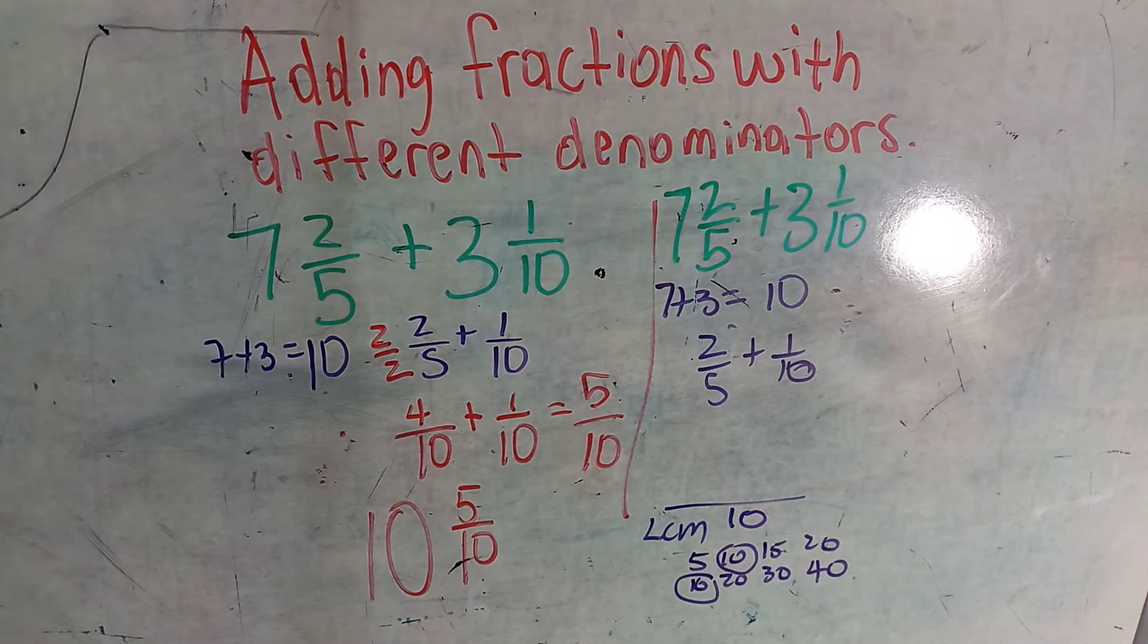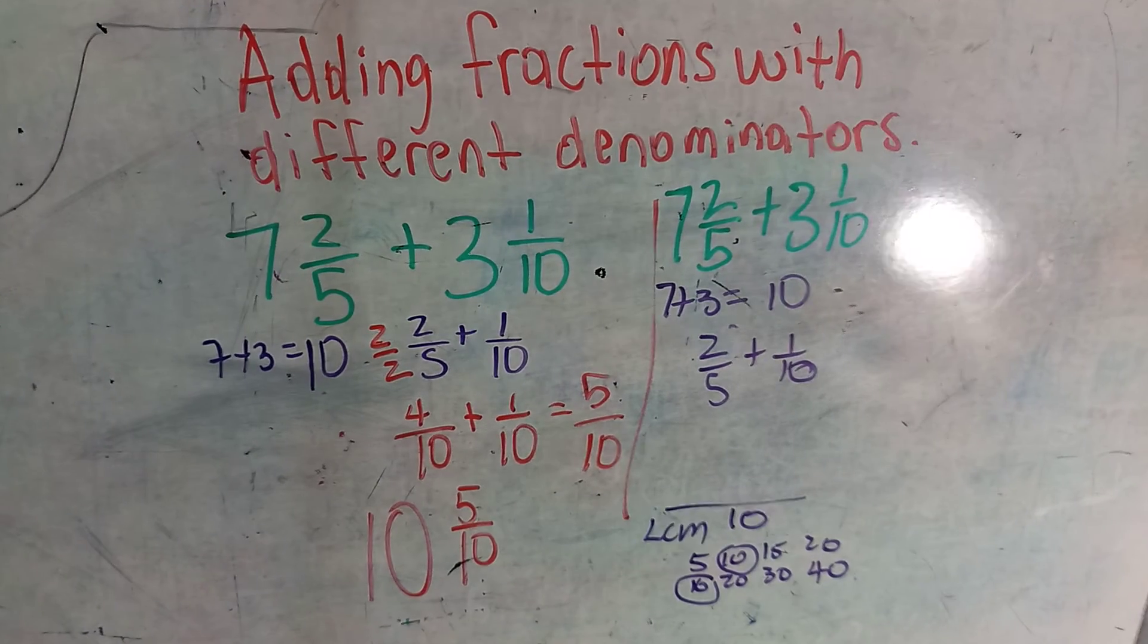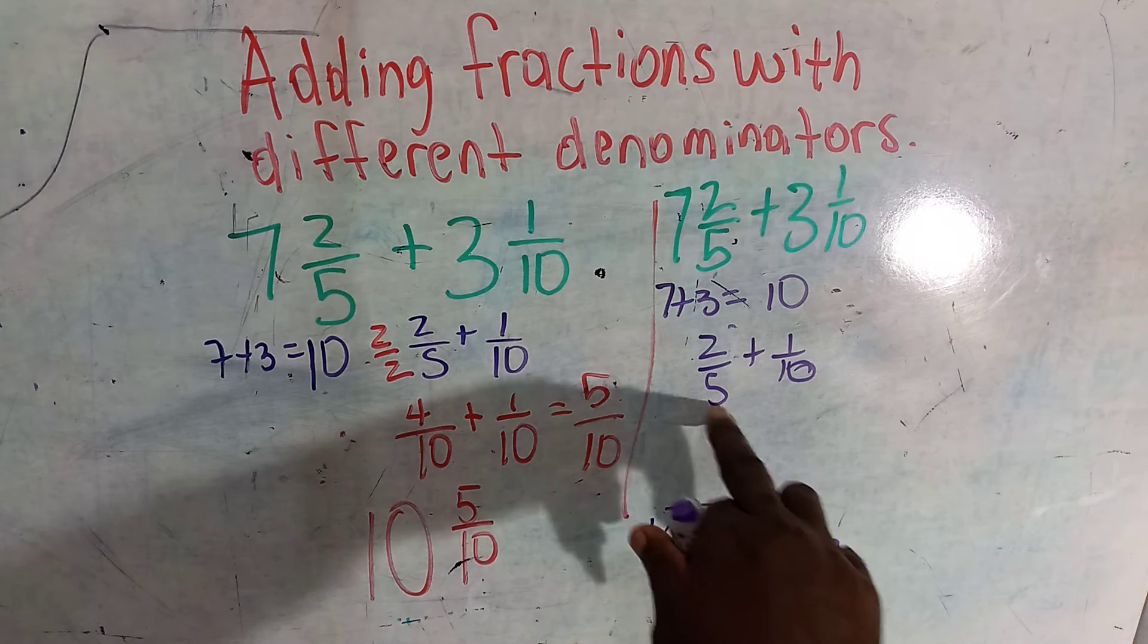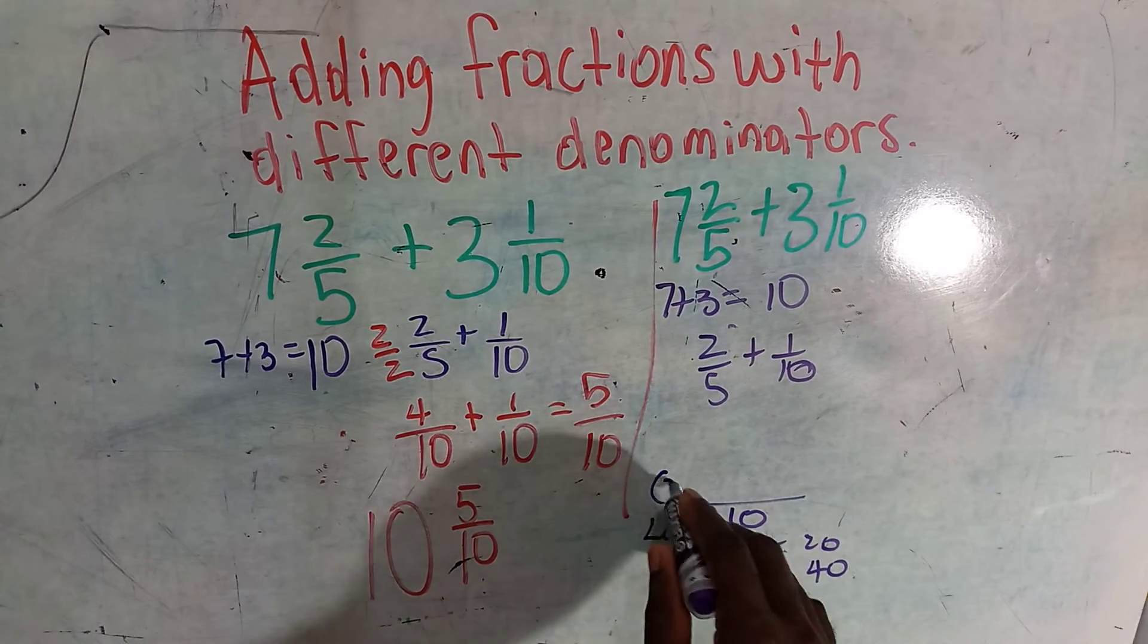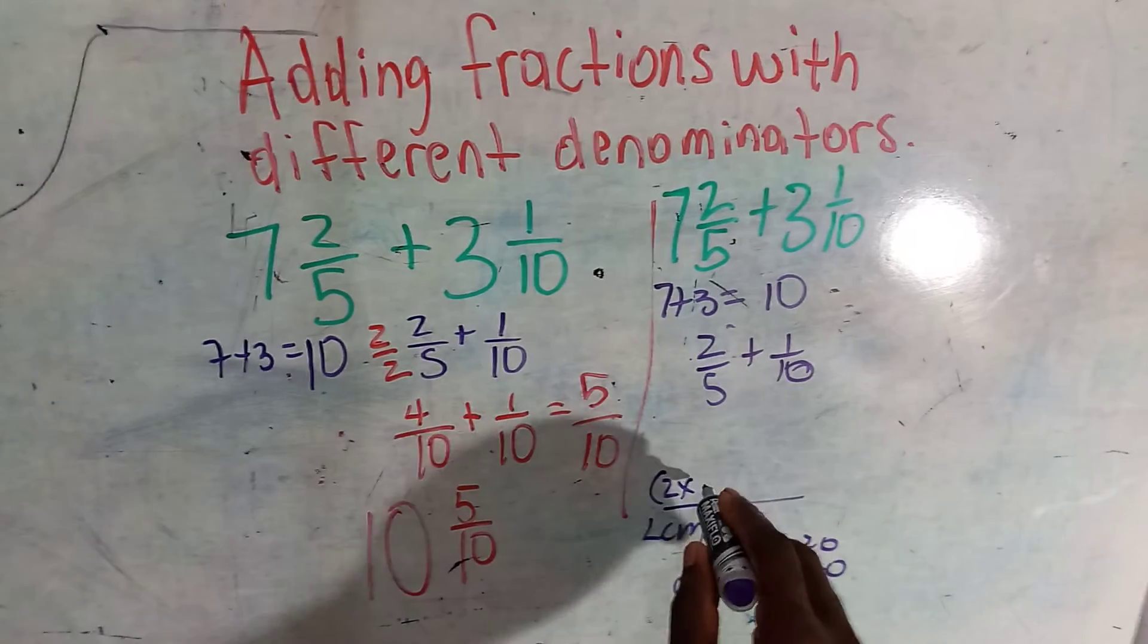First thing we do is division and multiplication. Five into ten, it can go two times. We multiply it by the numerator which is two. Ten can go into ten one time.